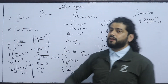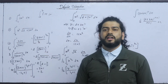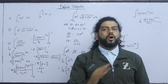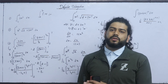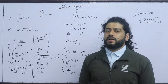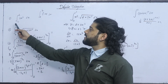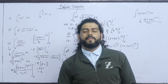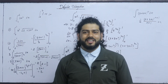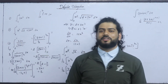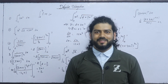The answer to the first question is 9, the second is (1/18)(5√5 − 2√2), and the third is 2. Every integration from the previous class — if you have to define it, then define it. Every class, you have to cover every question and solve it. Thank you.